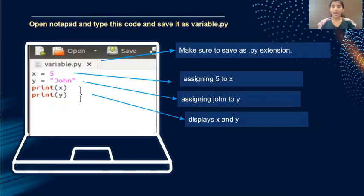Open notepad and type this code. X is equal to 5 where I am assigning 5 to variable x and the name john to the variable y. Next I'm following it with print statement. Type print and open the parenthesis. Inside the parenthesis give the variable which has to be printed. Here I need to print both x and y so I'm giving two print statements. Make sure you are saving this file with dot py extension.